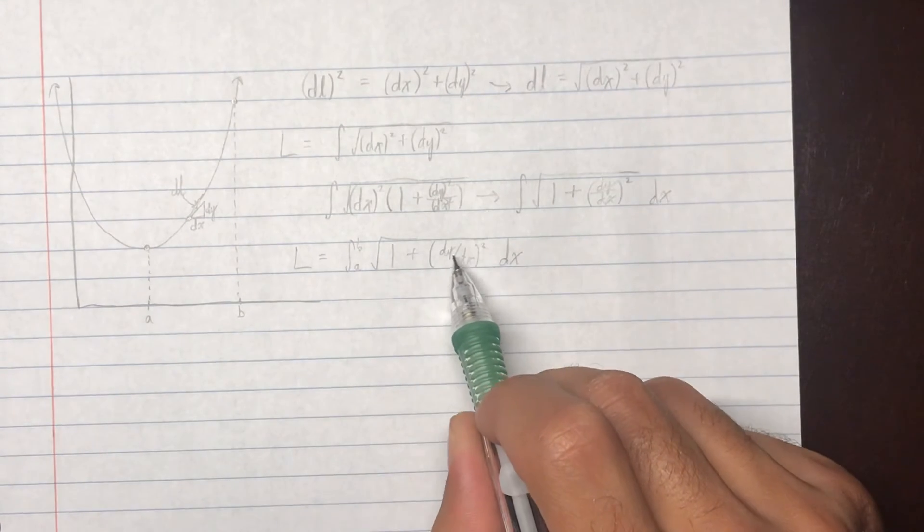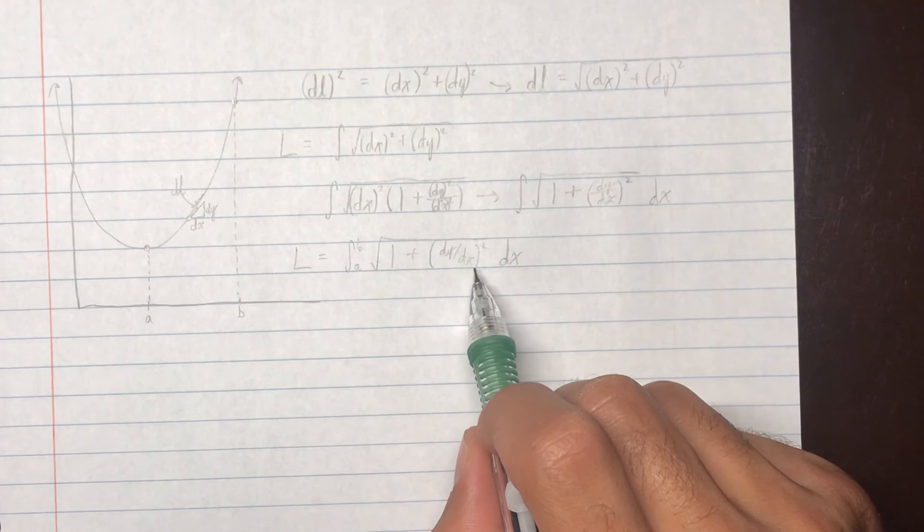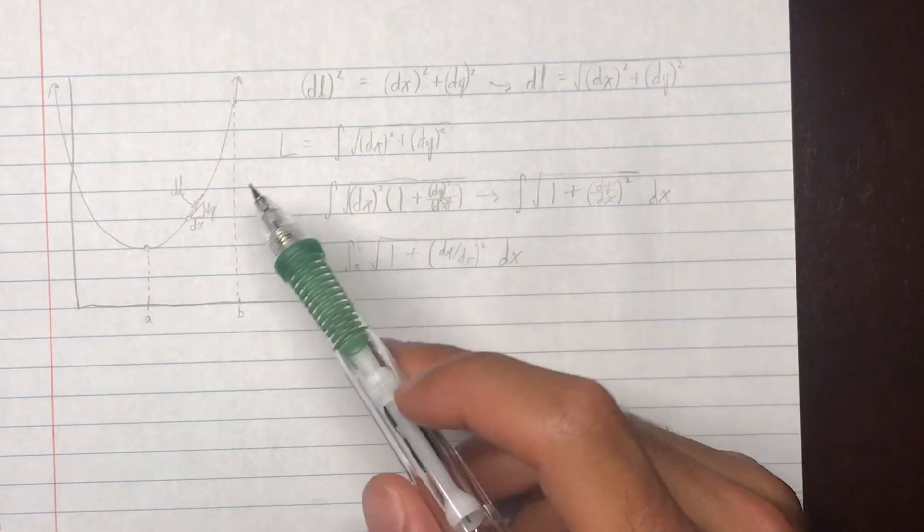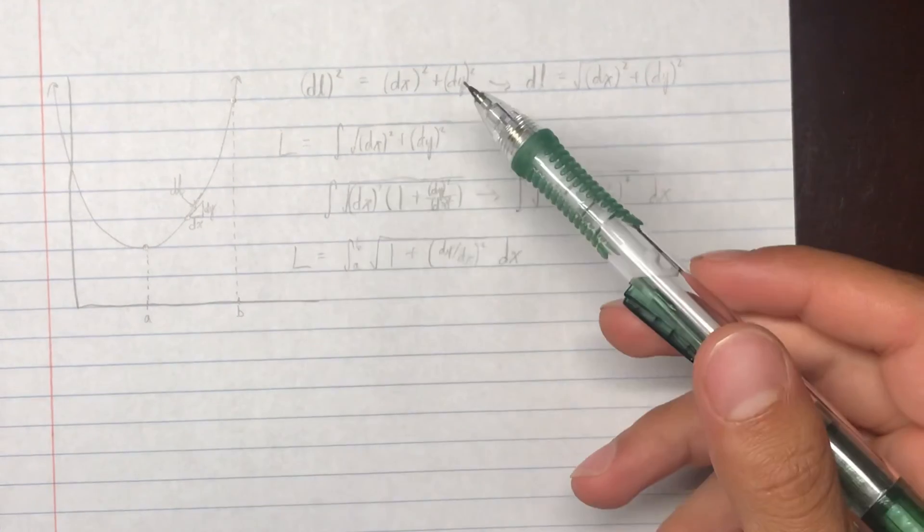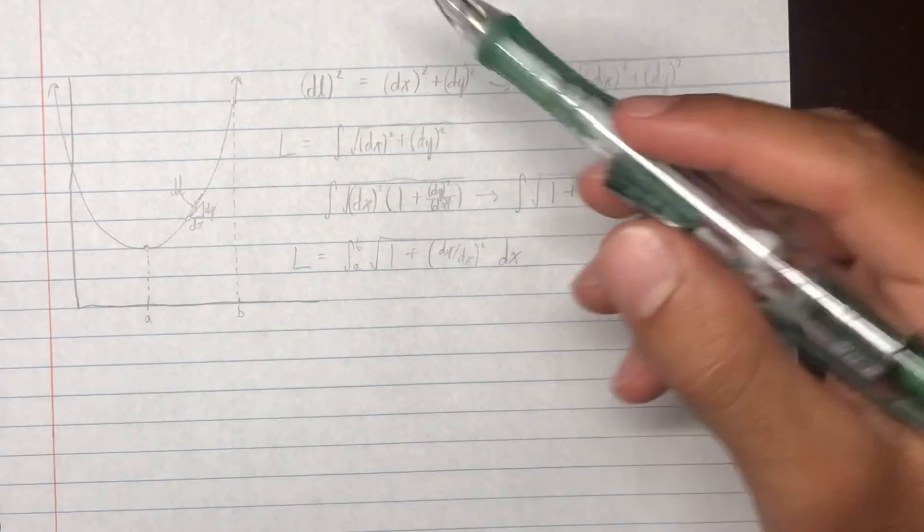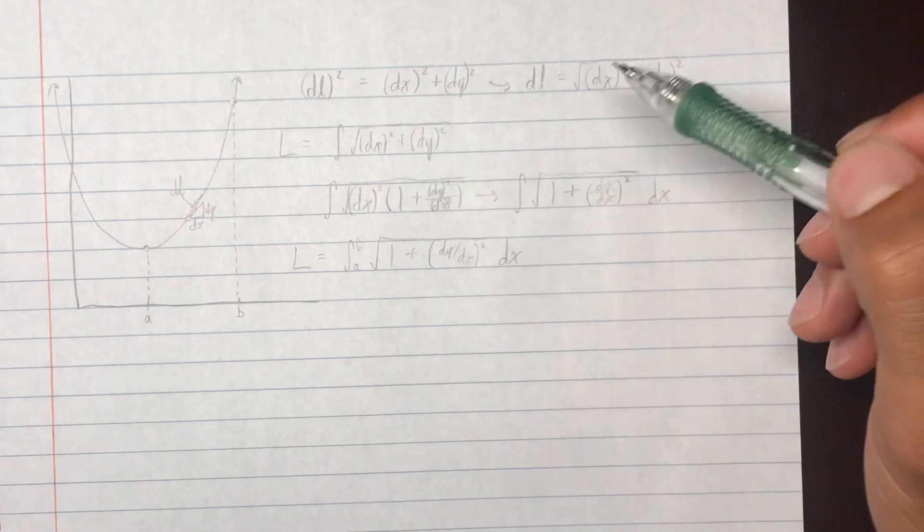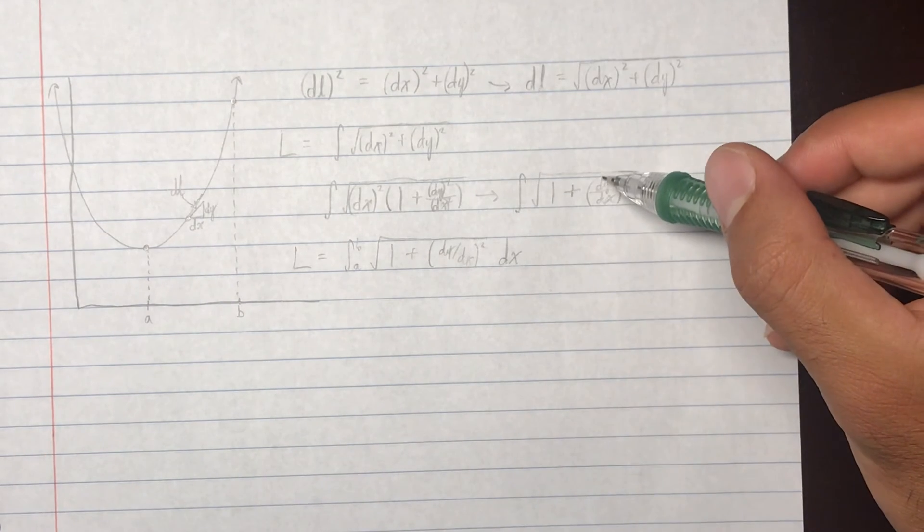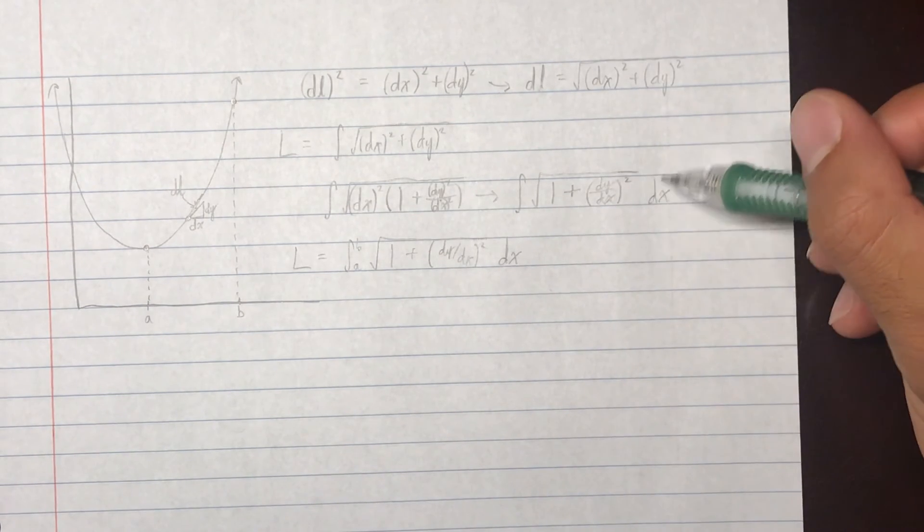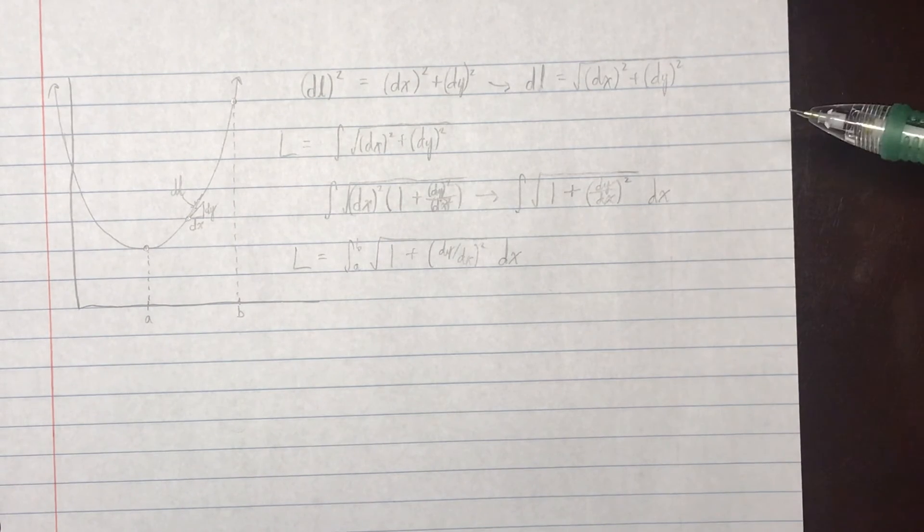So, this is basically just the derivative of the function with respect to x. So, if your function was with respect to y, at this step, you would factor out a dy squared instead, and you would end up with 1 plus dx over dy squared dy. So, it's just the same thing.